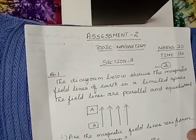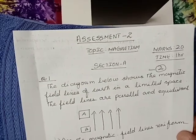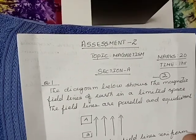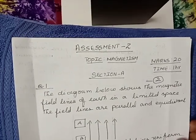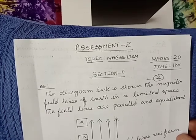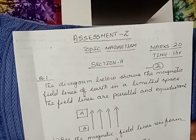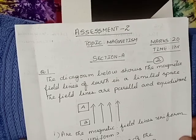Hello students, this is Assessment 2, topic: Magnetism, marks 20, time 1 hour. Question number 1: The diagram below shows the magnetic field lines of Earth in a limited space. The field lines are parallel and equidistant.